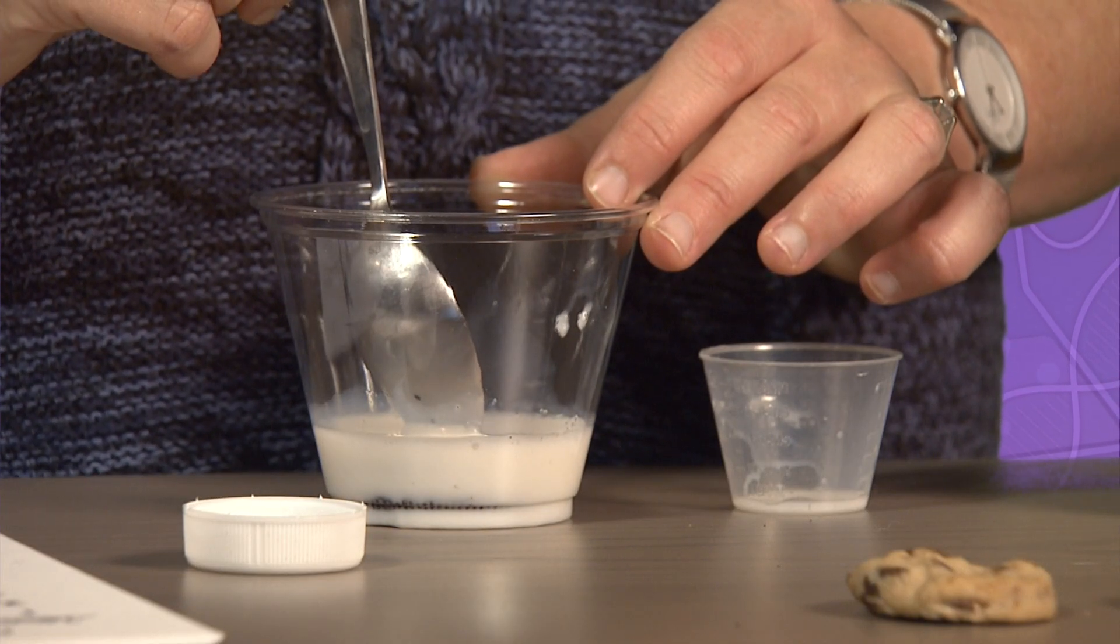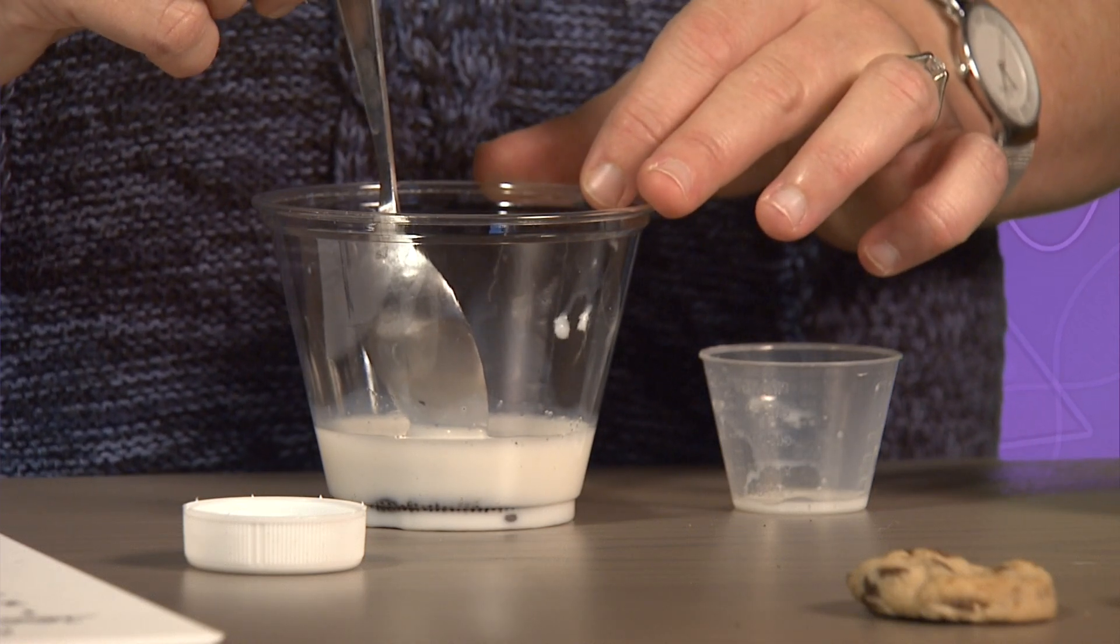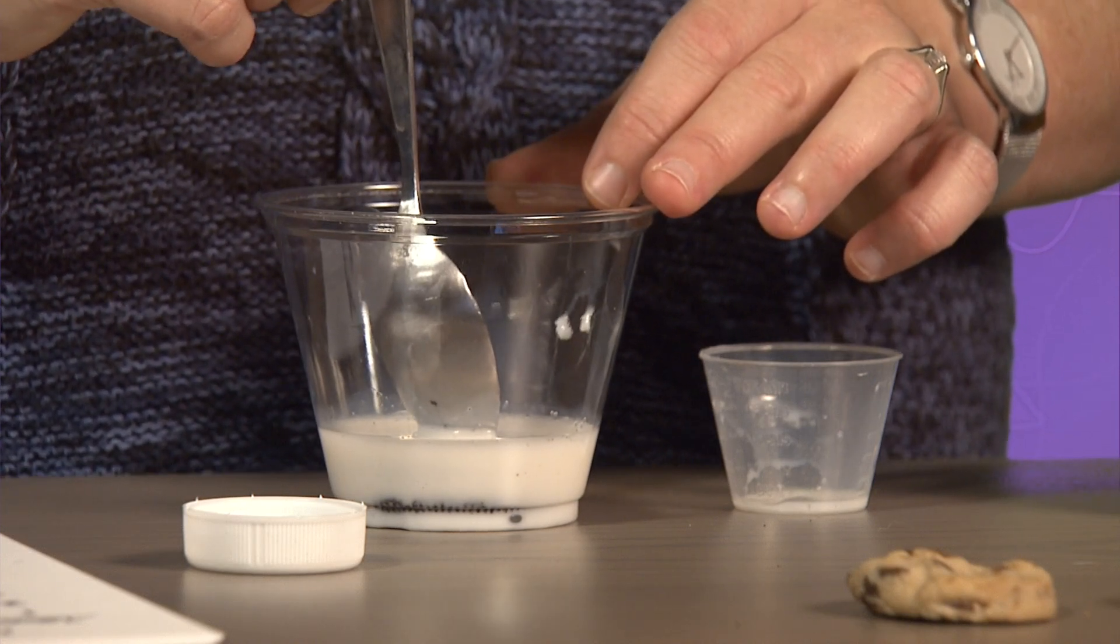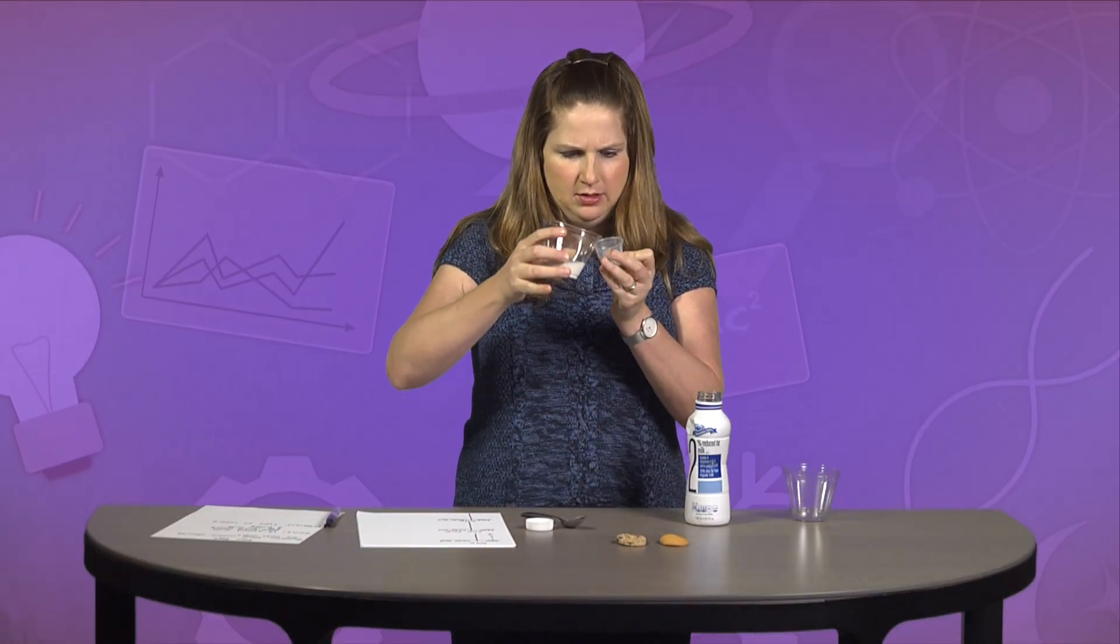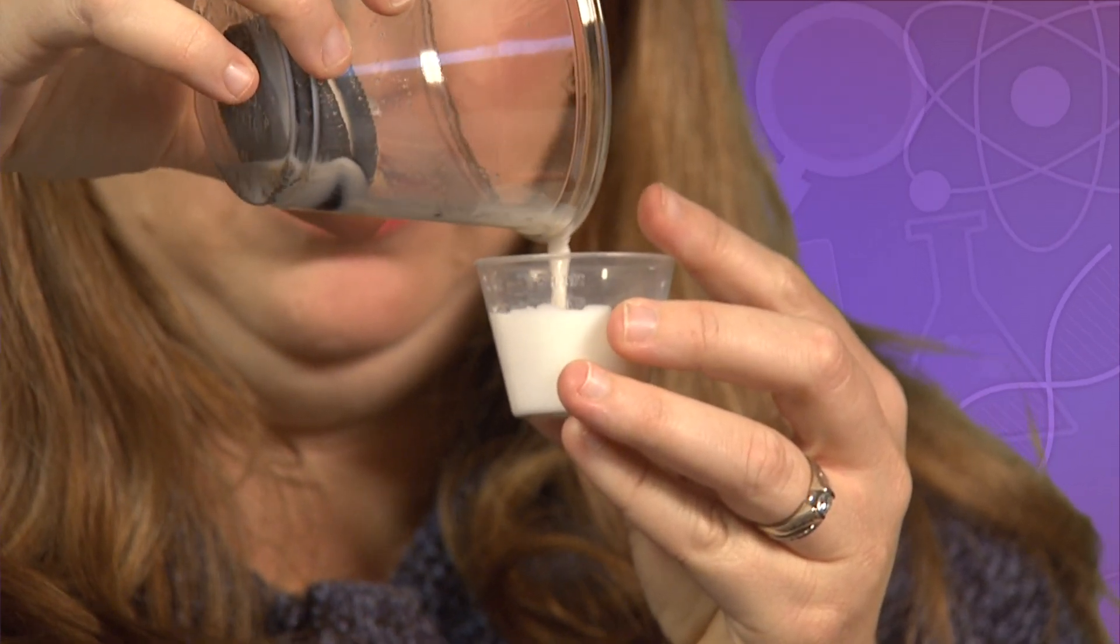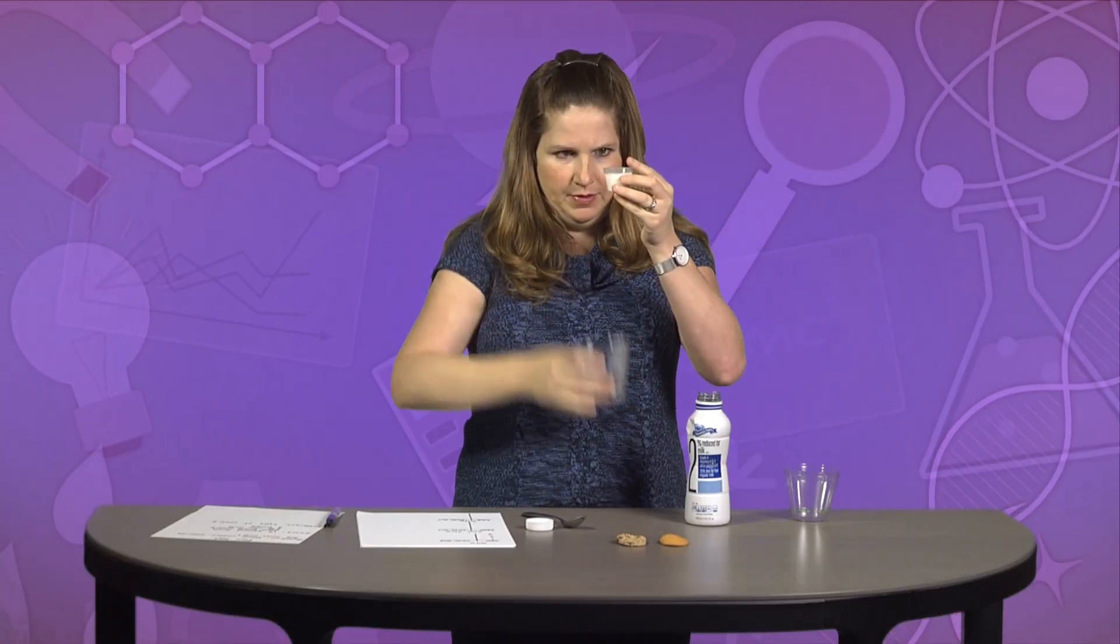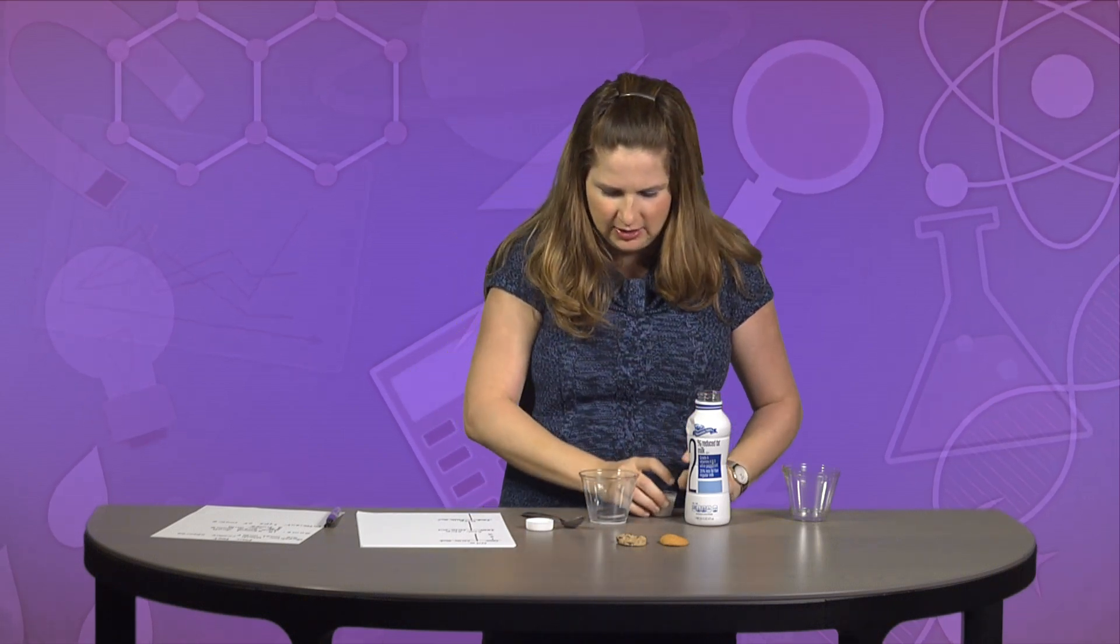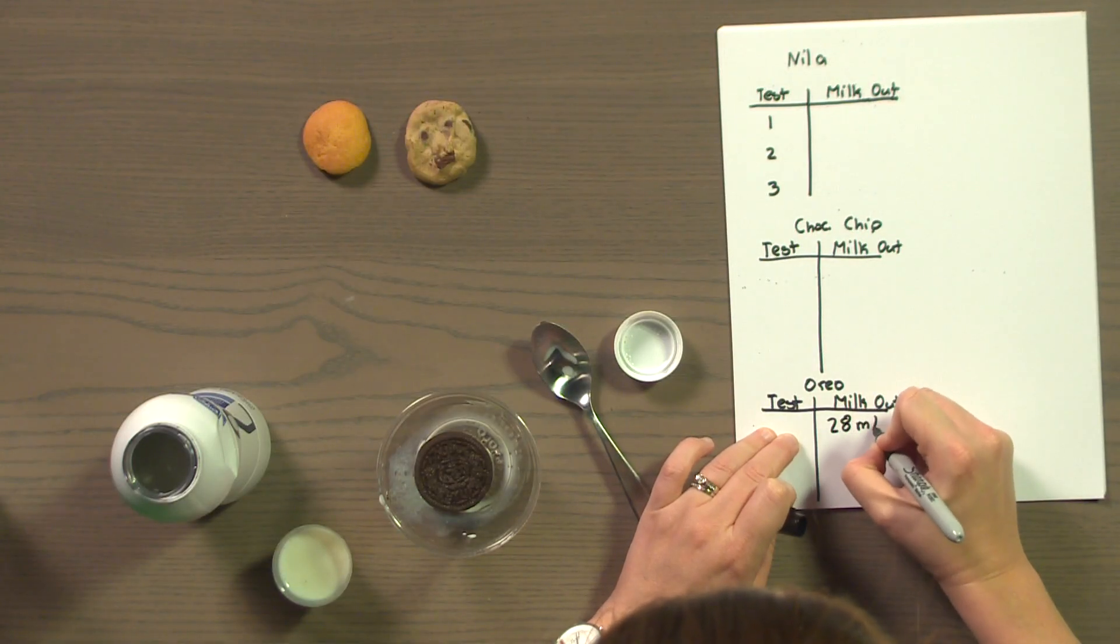1, 2, 3, 4, 5, 6, 7, 8, 9, 10, 11, 12, 13, 14, and 15. All right. Now, I'm going to pour out my milk. All right. So, using this, it looks like I got out 28 milliliters.